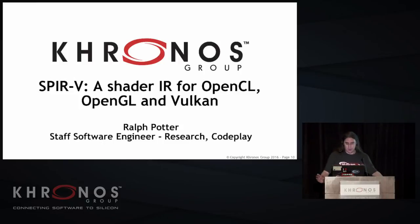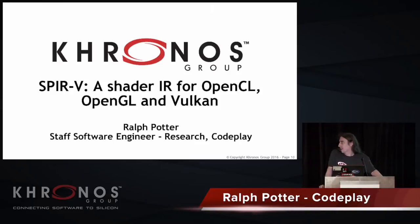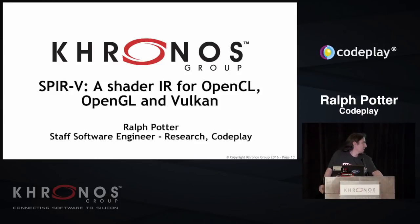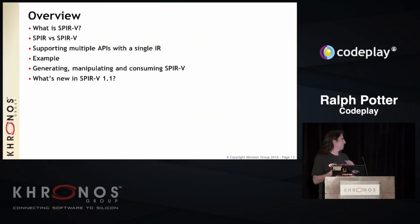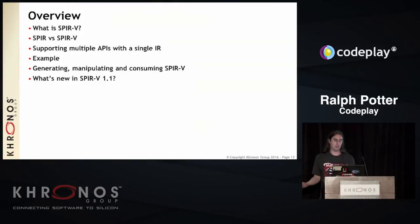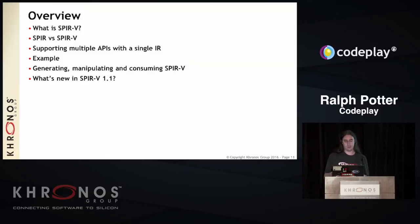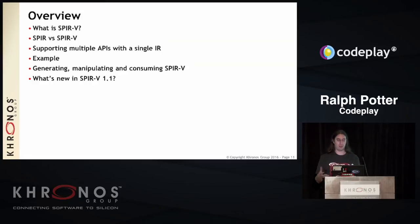I'm Ralph Potter, a research engineer at Codeplay working on programming models for heterogeneous systems. Today I'm going to talk about SPIR-V, the common shader IR for OpenCL, Vulkan, and — as of this week, via extension — OpenGL as well. I'll cover what SPIR-V is, how it differs from the old SPIR, what we do to support multiple APIs in a single IR, a quick example of what a SPIR-V module looks like, how you generate and consume SPIR-V, and what's new in SPIR-V 1.1 to support C++ in OpenCL.